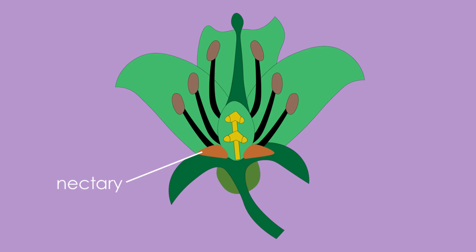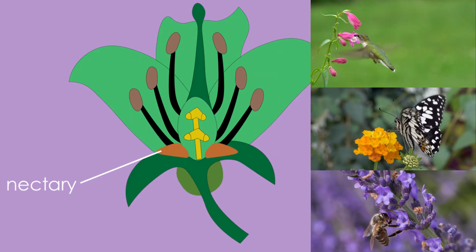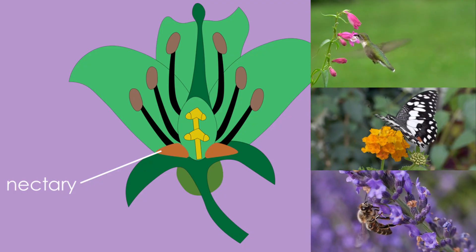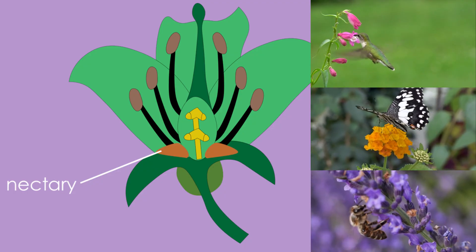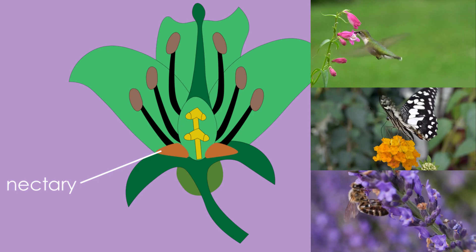Here is the nectary. The nectary of a flower is a special part that makes nectar, a sweet liquid. The nectary is usually found at the base of the petals. Nectar attracts animals like bees, butterflies, and hummingbirds, which come to the flower to drink the sweet liquid.